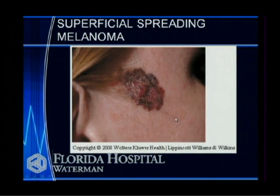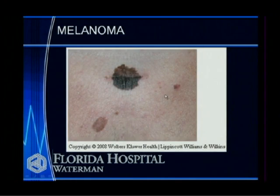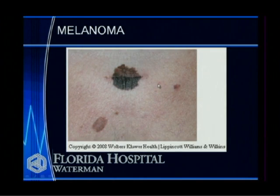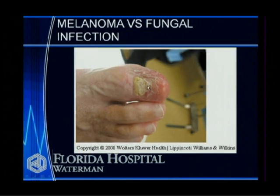Some people with aggressive melanomas do very well because their immune system is primed to attack it, while others have the opposite. Here's a superficial spreading melanoma that tracks along the surface of the skin and is less likely to be invasive. An ulcerated melanoma — where the superficial layer is eroded and there's scabbing and bleeding — significantly increases the risk for spread. Melanomas can arise on the fingers, underneath the fingernails — subungual melanomas have a much more aggressive and adverse prognosis. If something's not healing, keeps growing, keeps getting worse, a doctor needs to look at it.